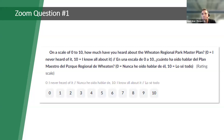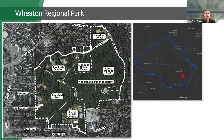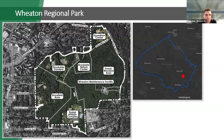We ask this question because we think it's important to explain a bit of the background of this project. Wheaton Regional Park, as most of you are familiar with, is in the southeastern corner of Montgomery County. It includes Brookside Gardens, the Nature Center, the Equestrian Center, and the Shorefield area — where there's adventure play, the mini train, and the carousel. A majority of the park is forested on steep slopes with great natural habitats, stream valleys, and environmental resources. The Rubini Athletic Complex is at the southern end of the park.